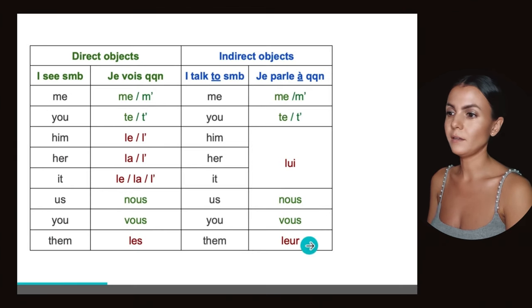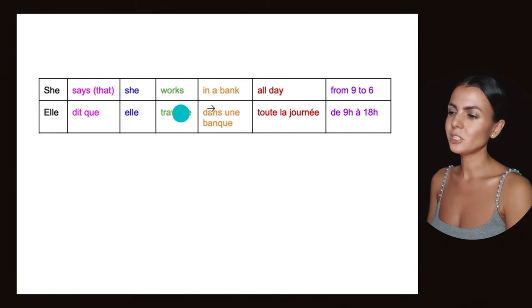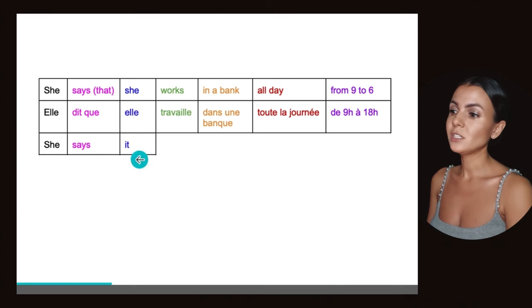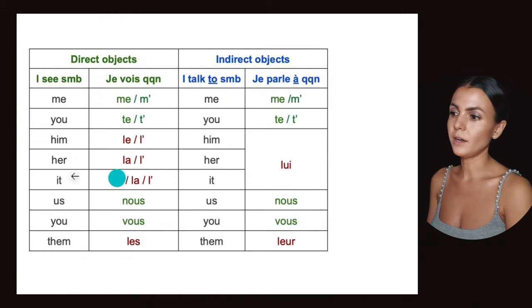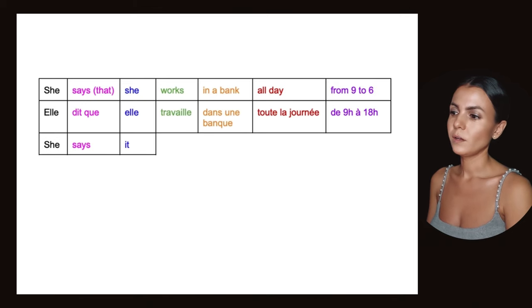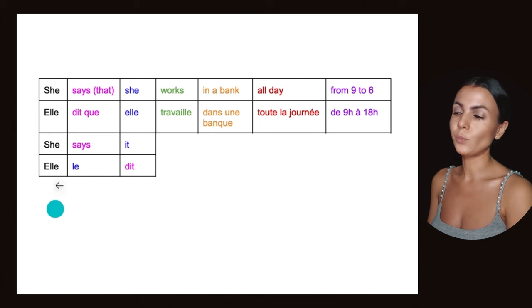Direct and indirect. So we have this sentence: She says she works in a bank all day from 9 to 6. Same structure: Elle dit qu'elle travaille dans une banque toute la journée de 9h à 18h. If we say she says it or that - in French, 'it' is le, which is a direct pronoun. So 'she says it' will be elle le dit. Direct pronoun le goes before the verb. We inverse, not like in English.